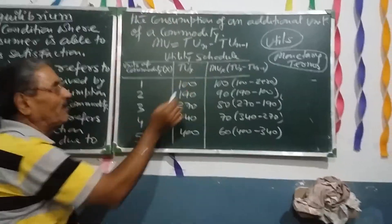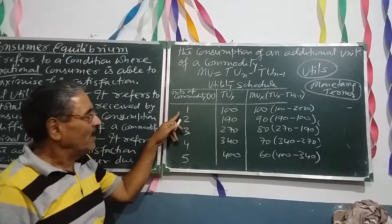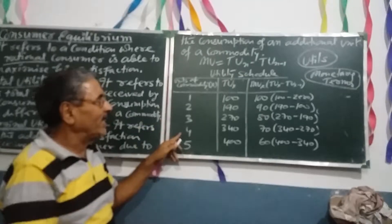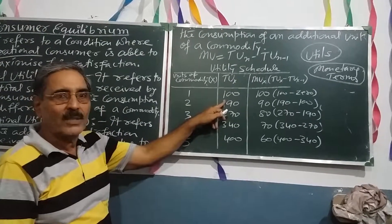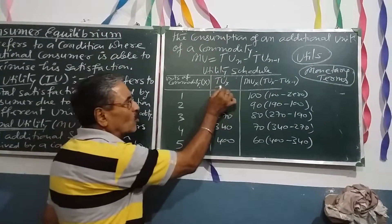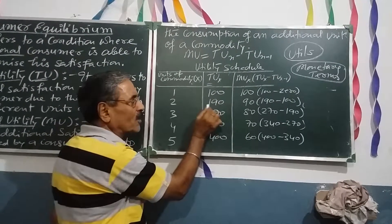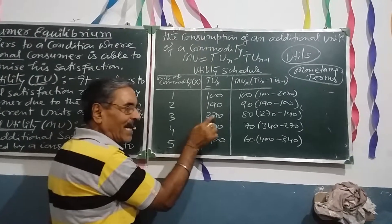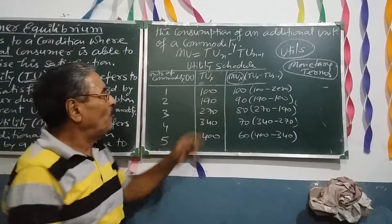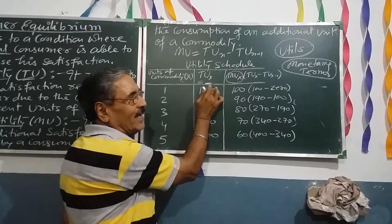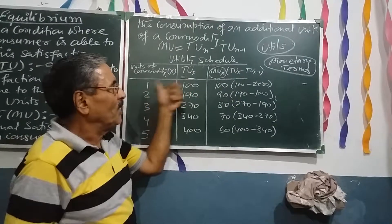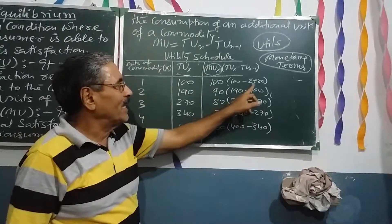This will be more clear from the utility schedule table. The units of commodity are listed as one, two, three, four, and so on. The total utility derived from the first mango was 100. From the first and second together it was 190, and with the third it becomes 260, then 330, and so on. To find marginal utility of the first mango: TU of x₁ minus TU of x₀, which is 100 minus 0, equals 100.